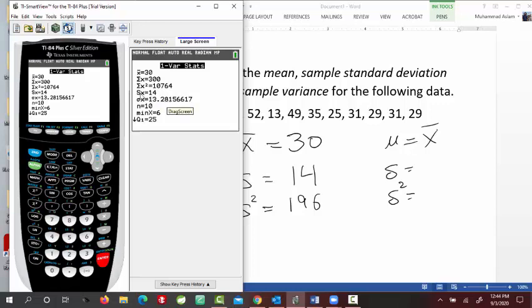Again, if data is from sample, you just go to S. And the mean for population and sample would be the same equation, the same number.